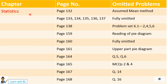Then we have the last chapter: Statistics. Let's see what omissions are there. Page number 132, the Assumed Mean Method has been omitted — it will not come in the exam. Pages 133, 134, 135, 136, 137 are fully omitted. Page 138, Problem Set 6.1 — questions 2, 4, 5, 6 will not be asked in the exam.